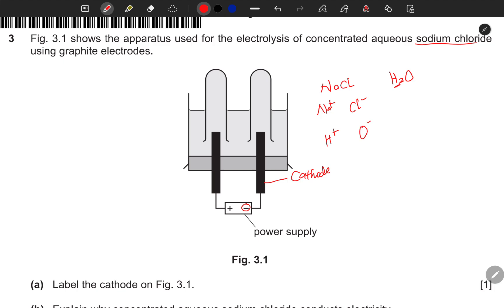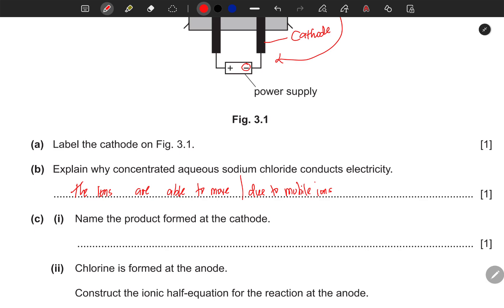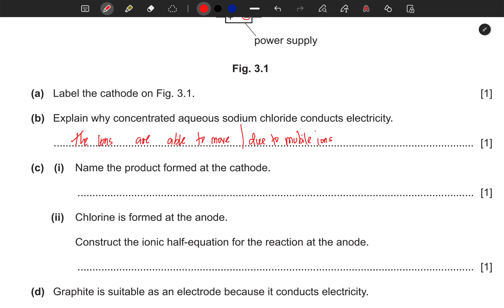Now the question is, what is formed at the cathode? Is it sodium or hydrogen? Well, the one which can easily be deposited in an aqueous solution is hydrogen. Hydrogen is formed there because it can easily be deposited due to its electrochemical position.